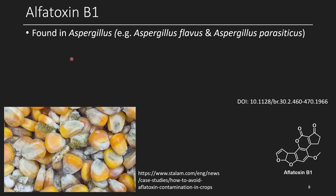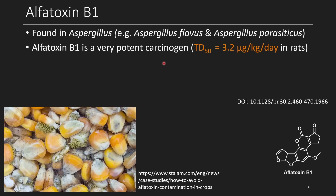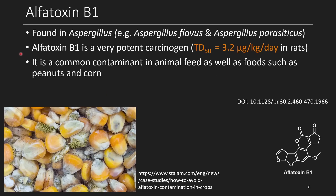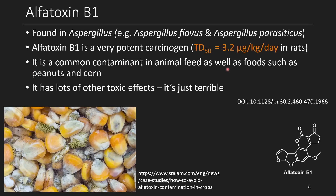The next compound is aflatoxin B1, found in aspergillus molds. Aflatoxin B1 is a really potent carcinogen with a toxicity of 3.2 micrograms per kilogram per day in rats. Most studies on these mycotoxins are done on animals, and then we draw conclusions for effects in people — similar to drug development. When looking at toxicity, it isn't really feasible to dose people with a known toxin. It's commonly a contaminant in animal feed as well as food we eat, such as peanuts and corn.